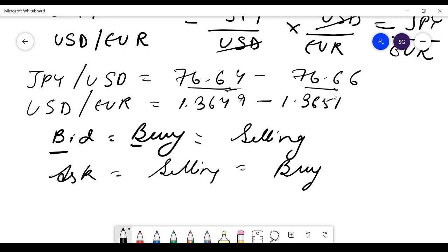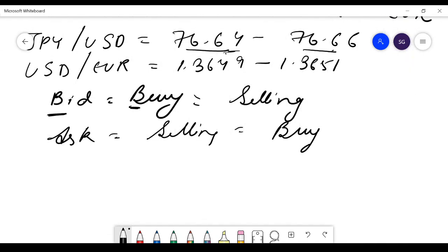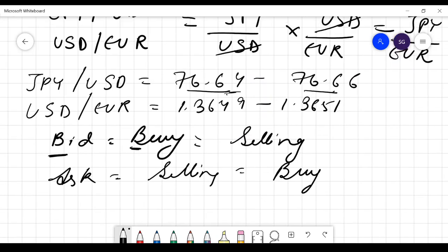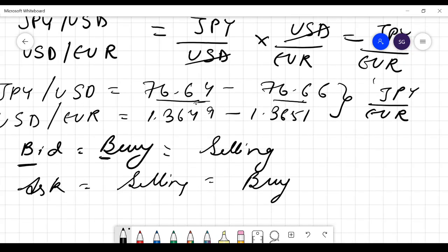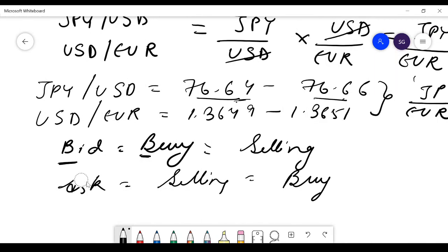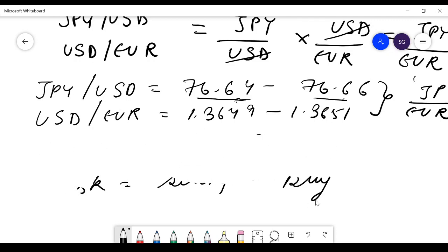So if you have to calculate from here Japanese yen by euro, you would simply multiply the two. So it would be 76.64 into 1.3649, which is 104.61. This is the bid rate, that is the buying rate.